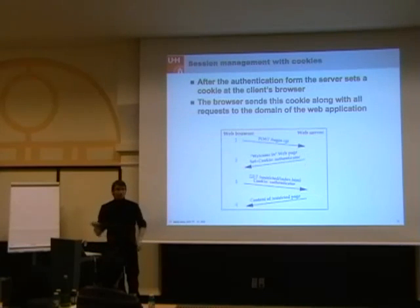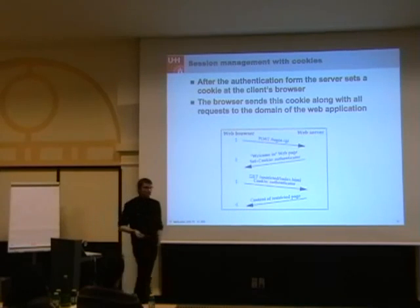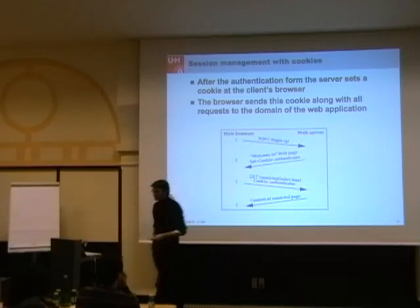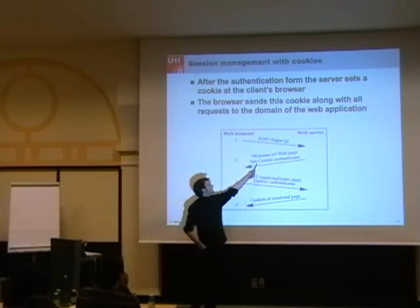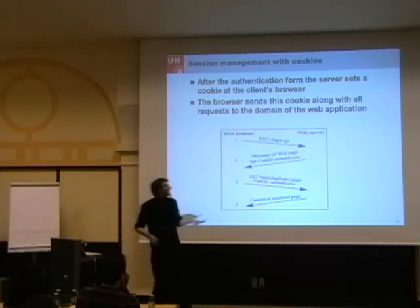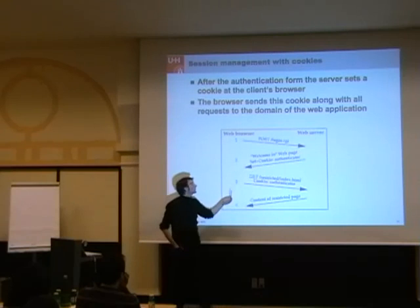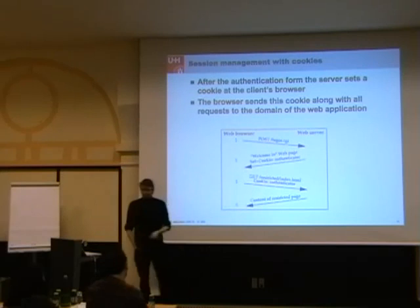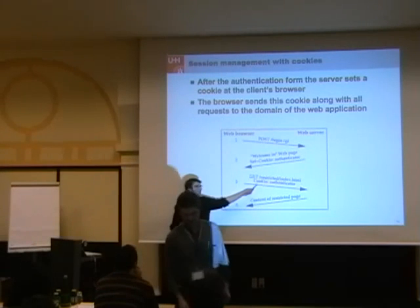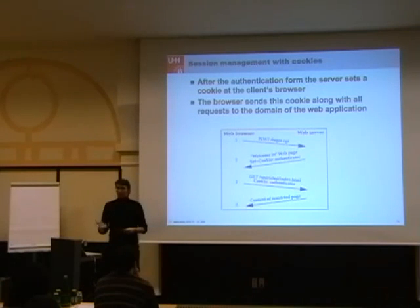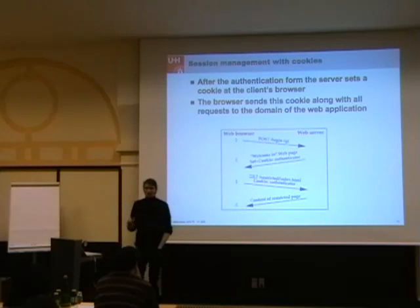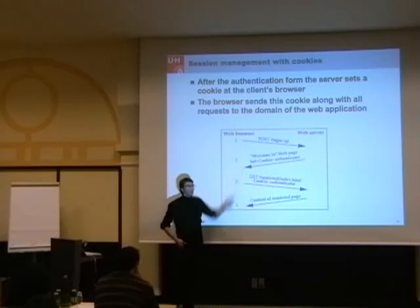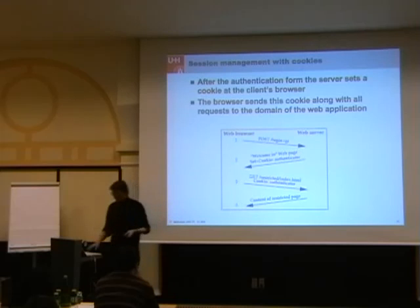How do you do authentication tracking with cookies? You have the initial login request by the user, posting username and password to login CGI. The web server says 'yes, this is Martin, the password is correct,' and sets an authenticator cookie. As far as the web server is concerned, this cookie is the identity of the user. Now, every further request going from my web browser to the web server's domain receives this cookie value automatically. My web browser sees 'Martin wants to do more banking,' another request to the bank, and the browser puts the cookie there automatically. The web application doesn't have to care about this, and I don't have to do anything — all is done by the browser. And this is the cause of the problem.